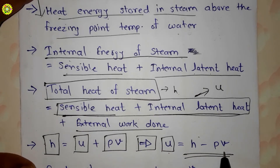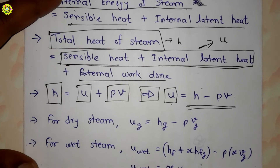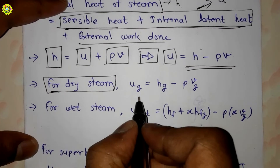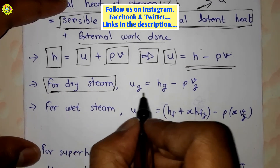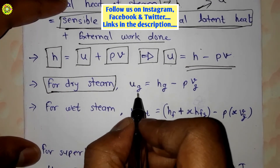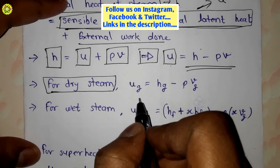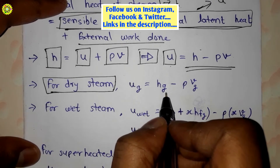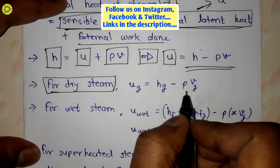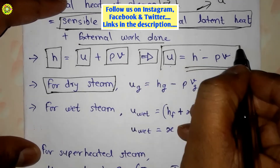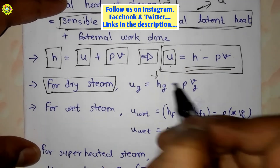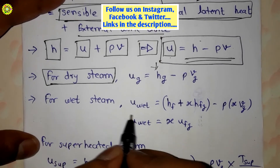For dry steam, internal energy u_g is calculated as: u_g = h_g − p·v_g.